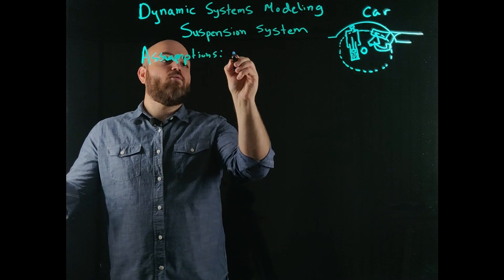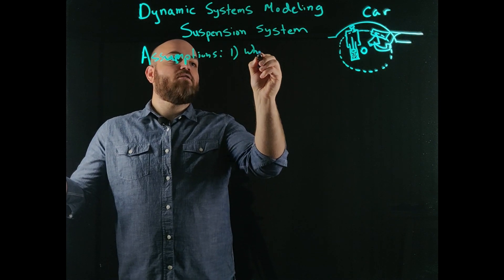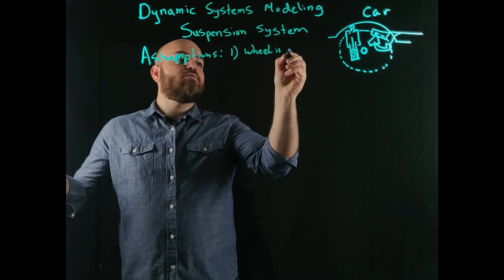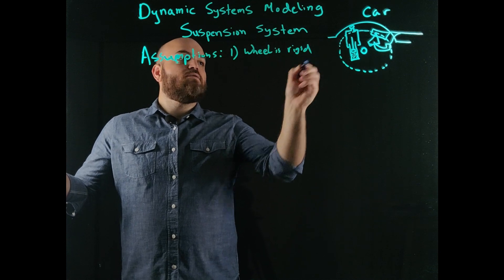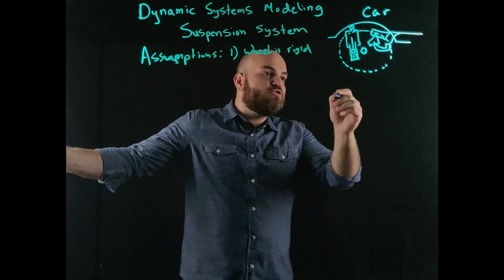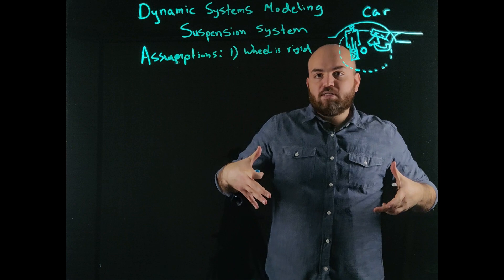One, the wheel is rigid. This may not be 100% true because there's the wheel and then there's the tire. Let's just make that assumption for now.